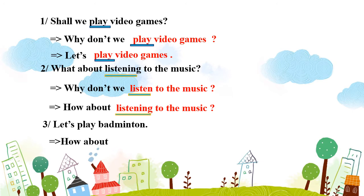Câu số 3: "Let's play badminton." – Chúng ta hãy chơi cầu lông. Viết lại: "How about playing badminton?" – Chơi cầu lông thì sao? Trong câu này: Let's đi với động từ nguyên mẫu, How about đi với động từ -ing.